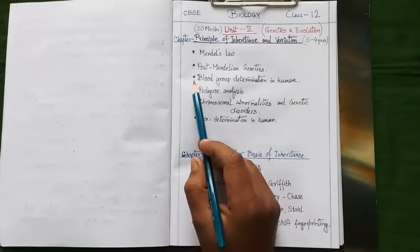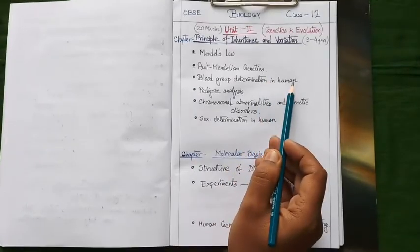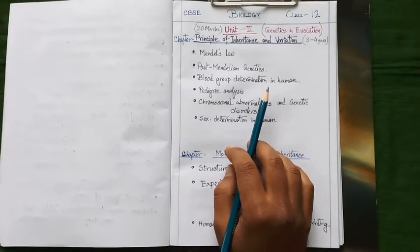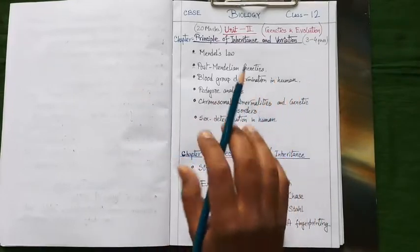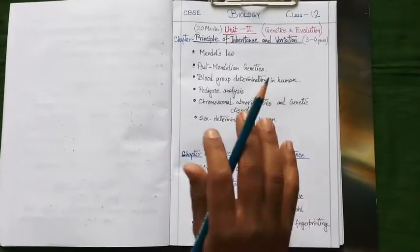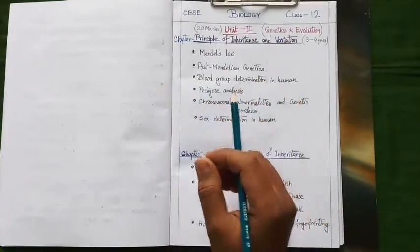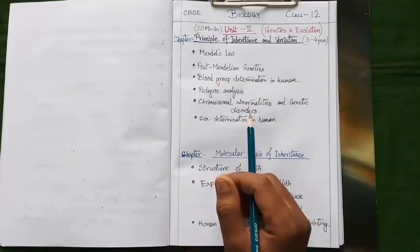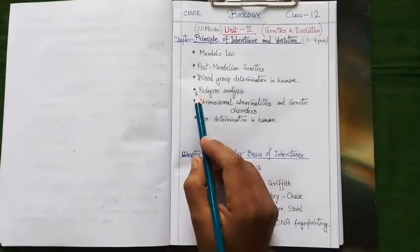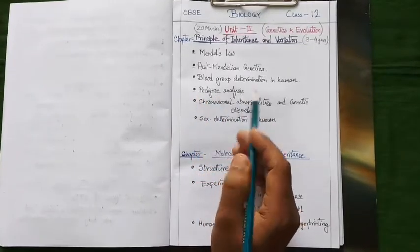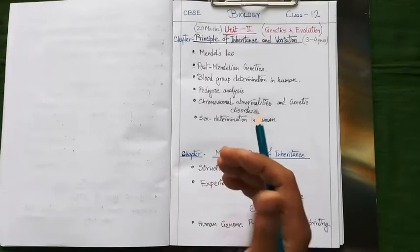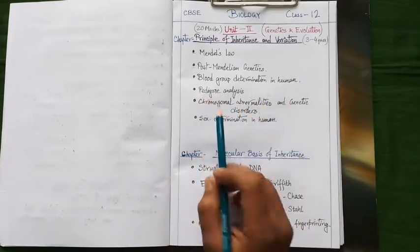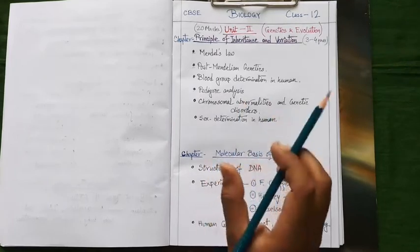Our next topic is blood group determination in human. You need to know the details about the ABO blood group system as well as the genetical background of our blood group determination. You can also encounter some questions like genetical cross of blood group in the exam. Next important topic is pedigree analysis. You need to practice more and more with different set of pedigree chart to get good score in the pedigree analysis section.